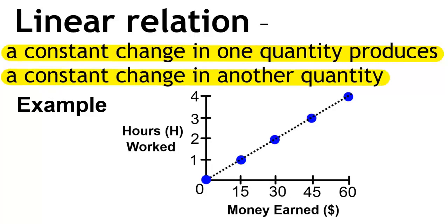For example, on the vertical axis here we have the hours worked, and on the horizontal axis we have the money earned. This would be a linear relation, as for every one hour worked, the money earned will be $15.